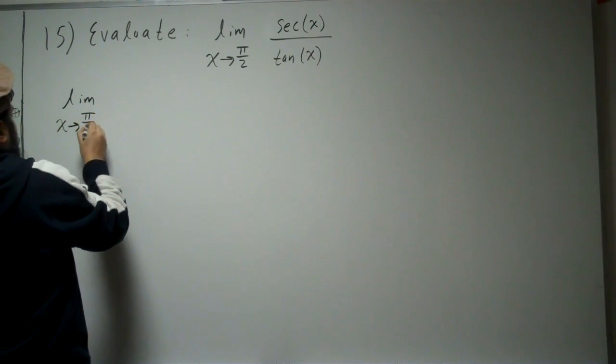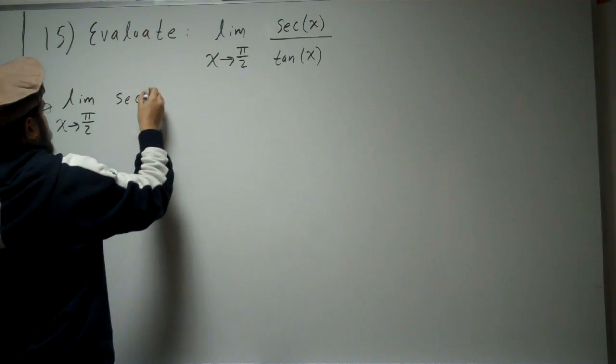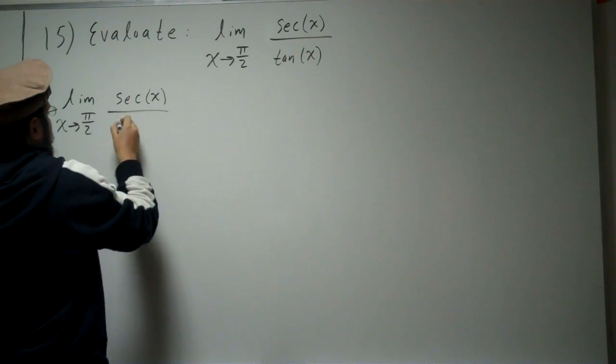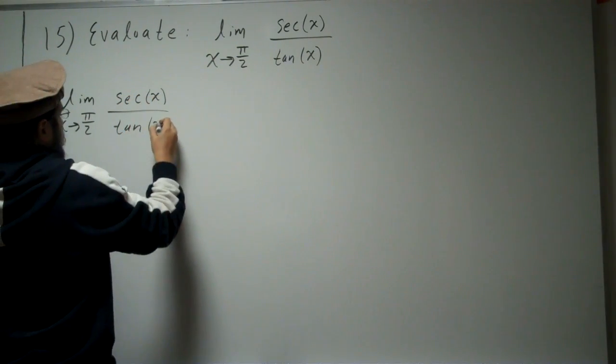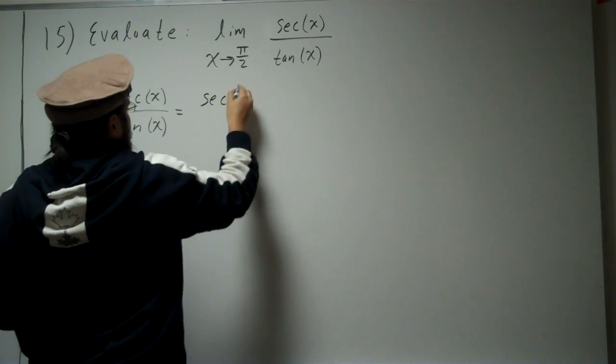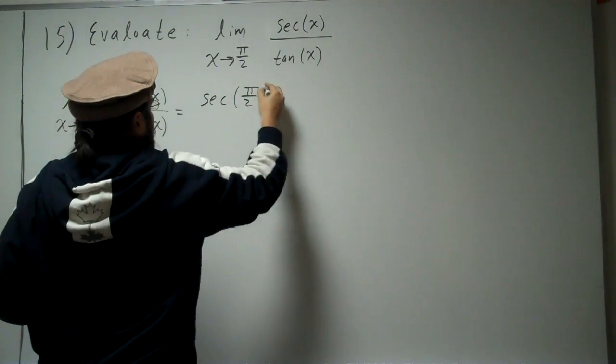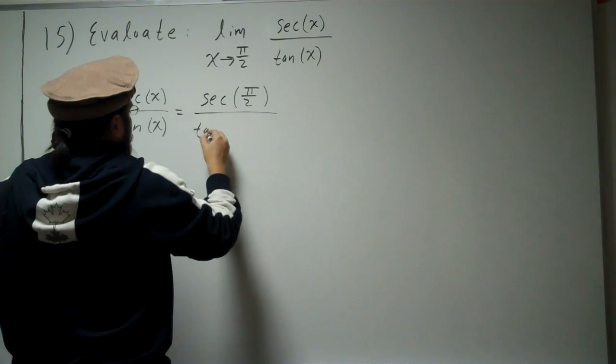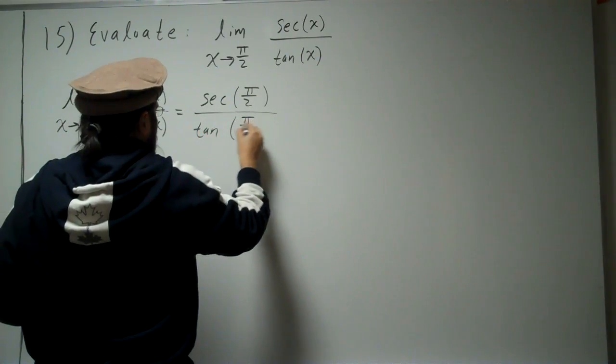Rewriting this, and then I'm going to plug it in. Alright, so I plug it in here for x, I'm going to get secant pi over 2 divided by tangent of pi over 2.